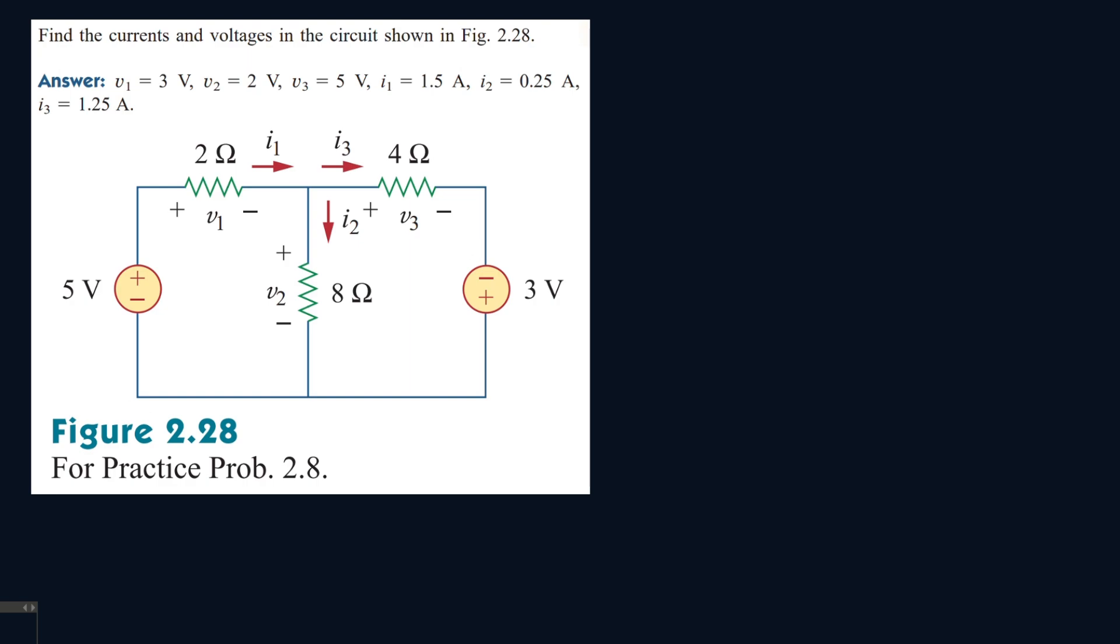So we have a lot to do. We have to find all the currents, all the voltages, so we have to find all of those. Let's start by doing a mesh. Let's call this one IA, and let's call this one IB.